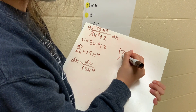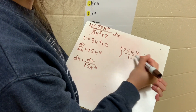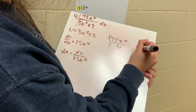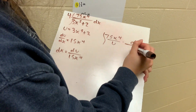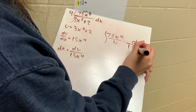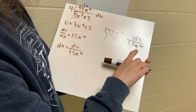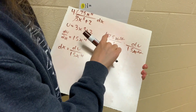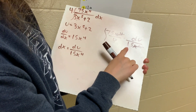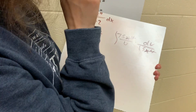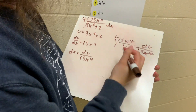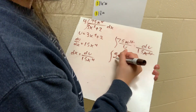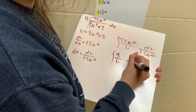So it's the integral of 75x to the fourth over u times du over 15x to the fourth. Right here you can see that the x to the fourths both cancel out. And then you have 75 divided by 15, which is 5. So then it will turn into integral of 5 over u times du.